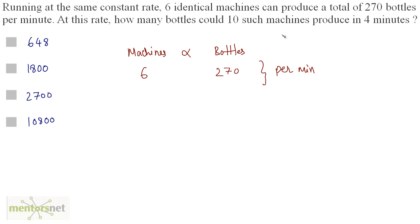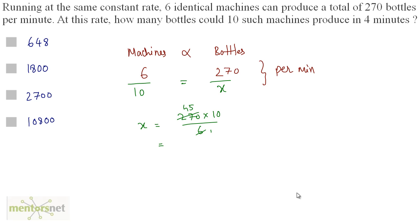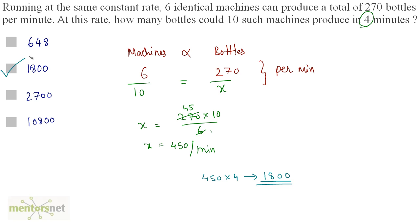Let us calculate how many bottles 10 machines produce in 1 minute. This is a direct proportion, so we equate the ratios: X equals 270 times 10 divided by 6, which equals 450. So 450 bottles per minute. In 4 minutes, 450 times 4 bottles will be produced. 450 times 4 gives you 1800. So 1800 bottles are produced in 4 minutes. Option B is the correct answer.